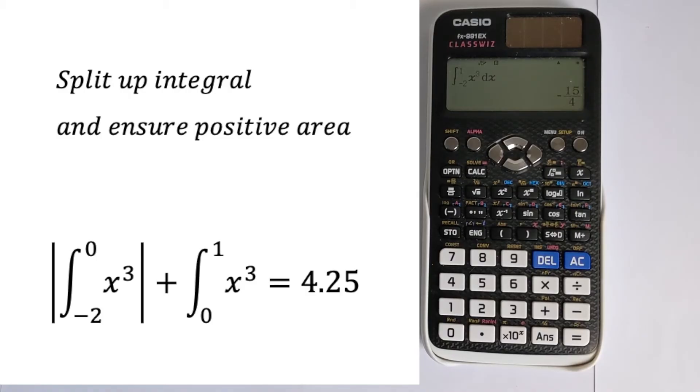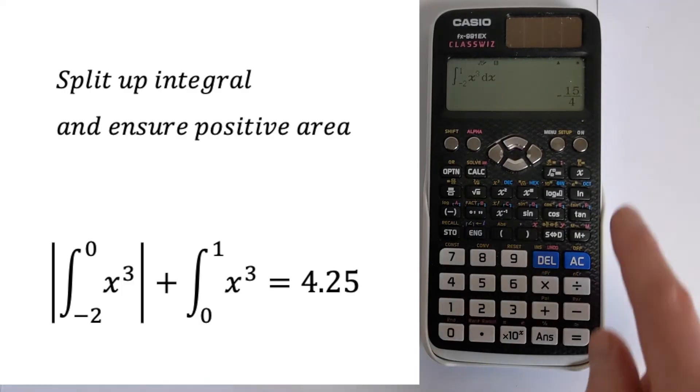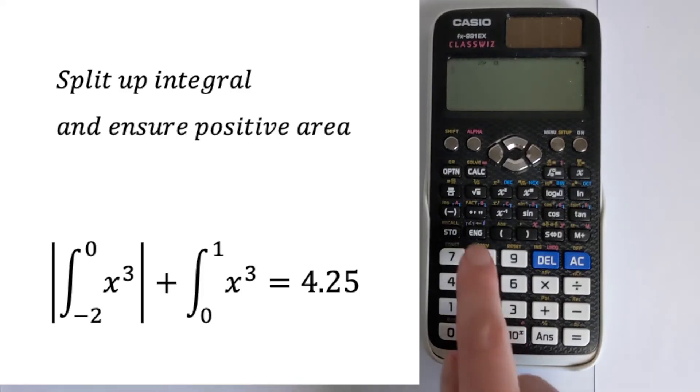So we're going to do the integral from minus two to zero. And we need to take the absolute value of that. So we have to make that be positive. So we get a positive area. And then we have to add on the remaining integral. So I'll show you how you can enter this accurately.